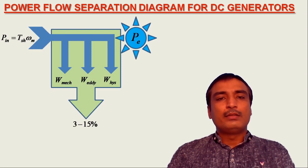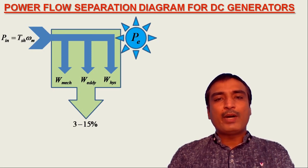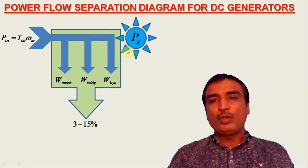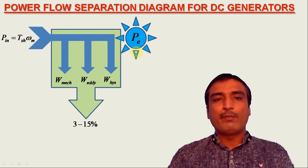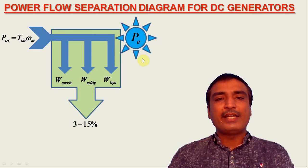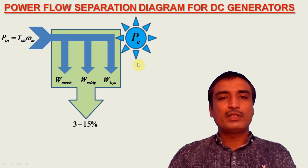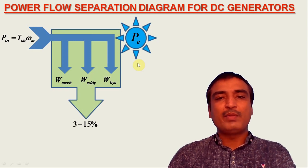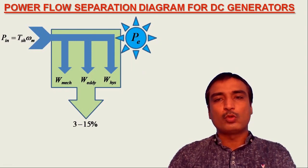The net electrical power developed in the armature is equal to the product of generated EMF Eg and the armature current Ia. Furthermore, there occur some internal electrical losses in the DC generator.